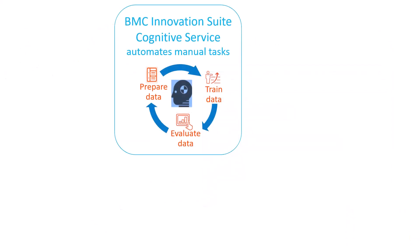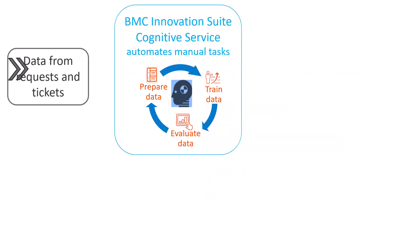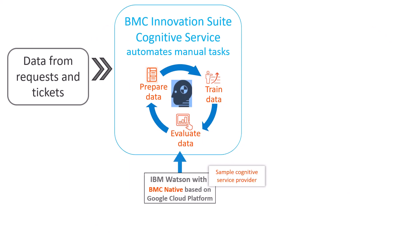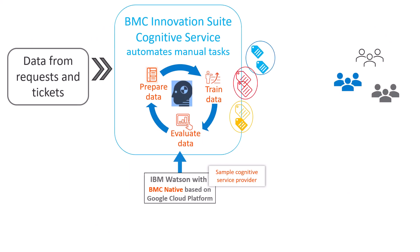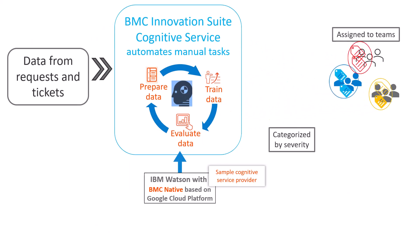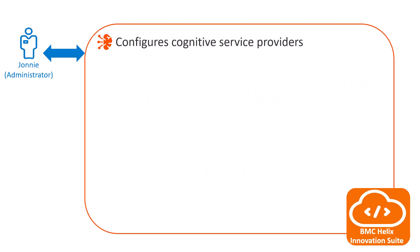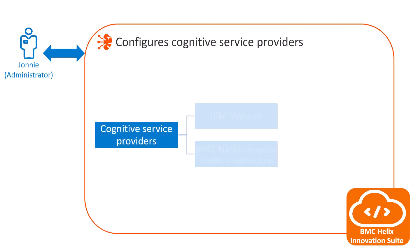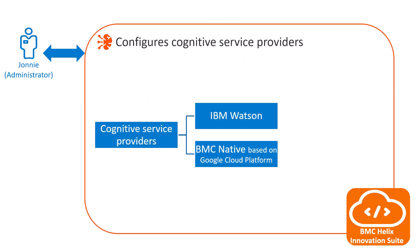Because Apex Global wants to use Cognitive Service to automate their application for auto-assignment and categorization of requests and tickets, Johnny chooses the appropriate Cognitive Service provider and configures the Cognitive Service.